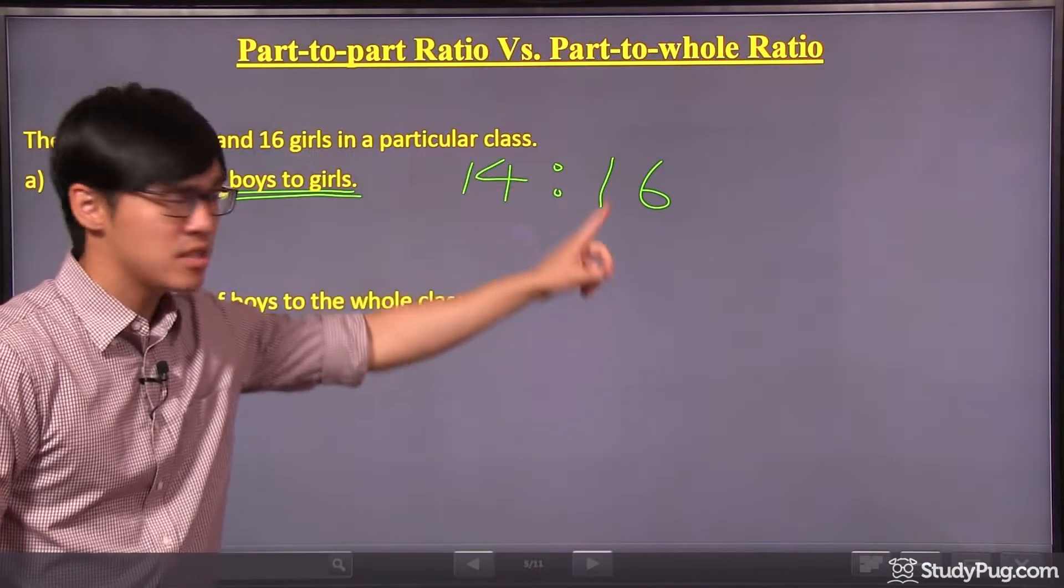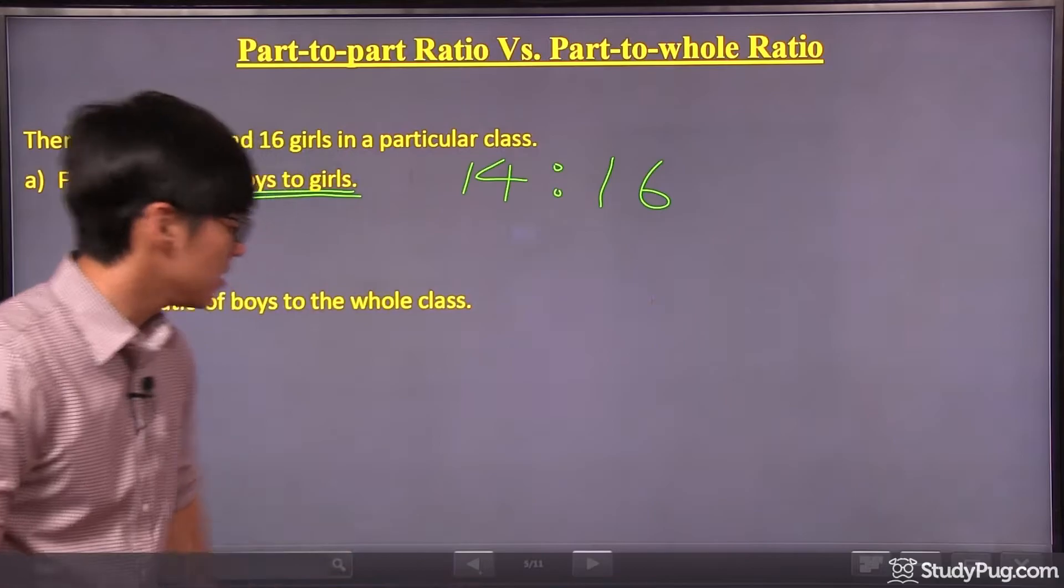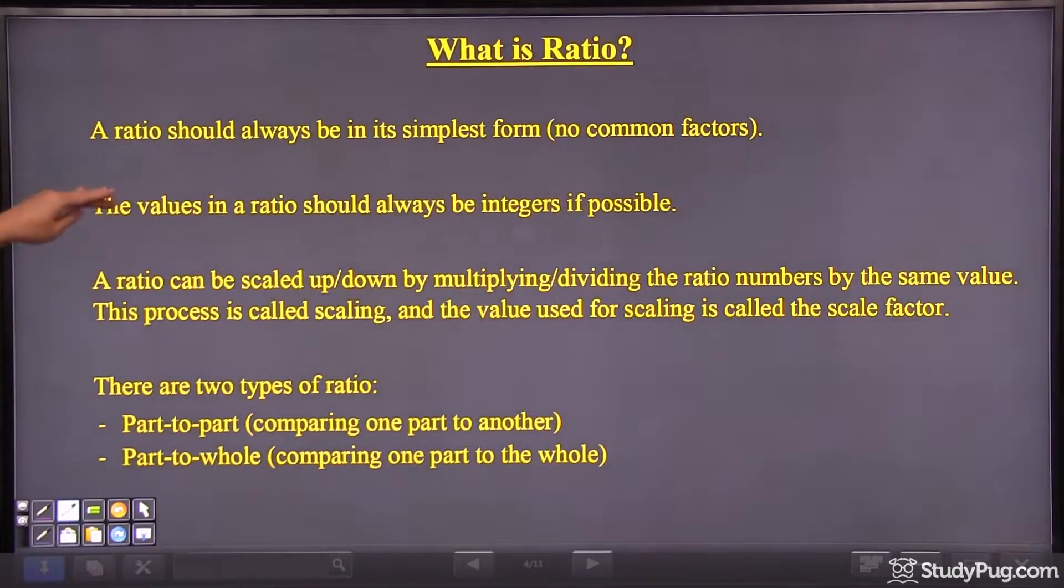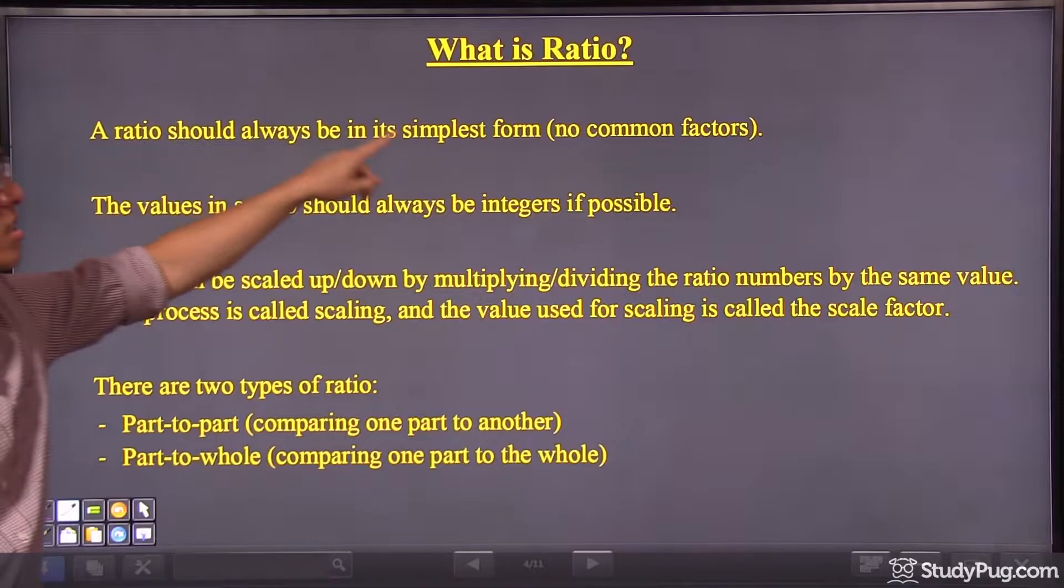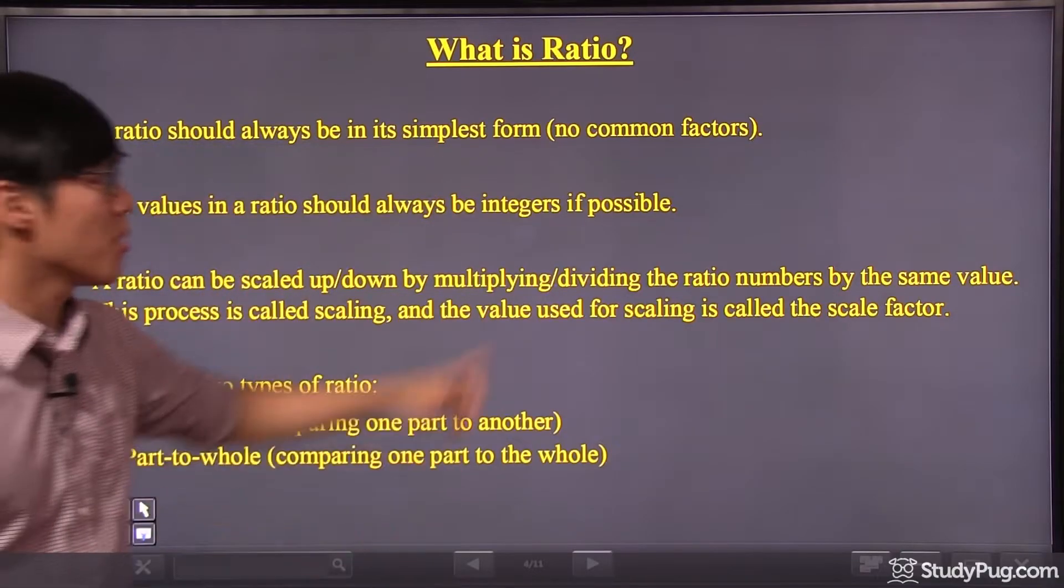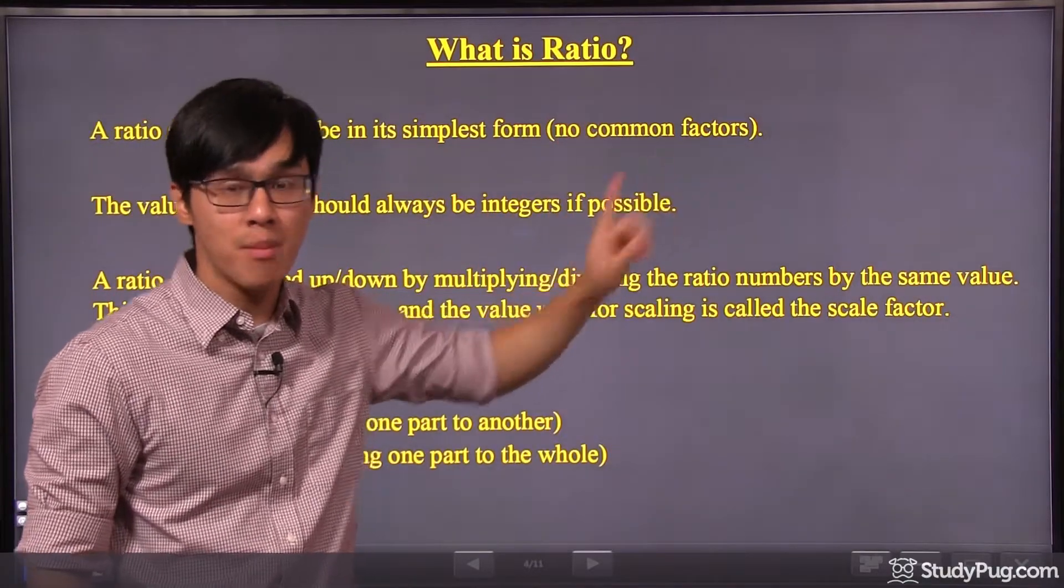Alright, however, this is not the final answer because we know that a ratio should always be in the simplest form, or the reduced form, meaning that there should be no common factors.